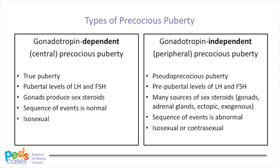Gonadotropin levels are pre-pubertal or suppressed because of negative feedback from sex steroids on the hypothalamus and pituitary gland. The sex steroids are made autonomously without any stimulating gonadotropins, and can come from the gonads, the adrenal glands, or other ectopic places like the liver. There can also be an exogenous source, such as medications. Because there is no regulation by gonadotropins, physical manifestations can occur out of normal sequence — for instance, a girl can have menstrual bleeding before breasts fully develop. The manifestations can be isosexual or contrasexual; girls can have a male pattern hair distribution, and boys can develop gynecomastia.